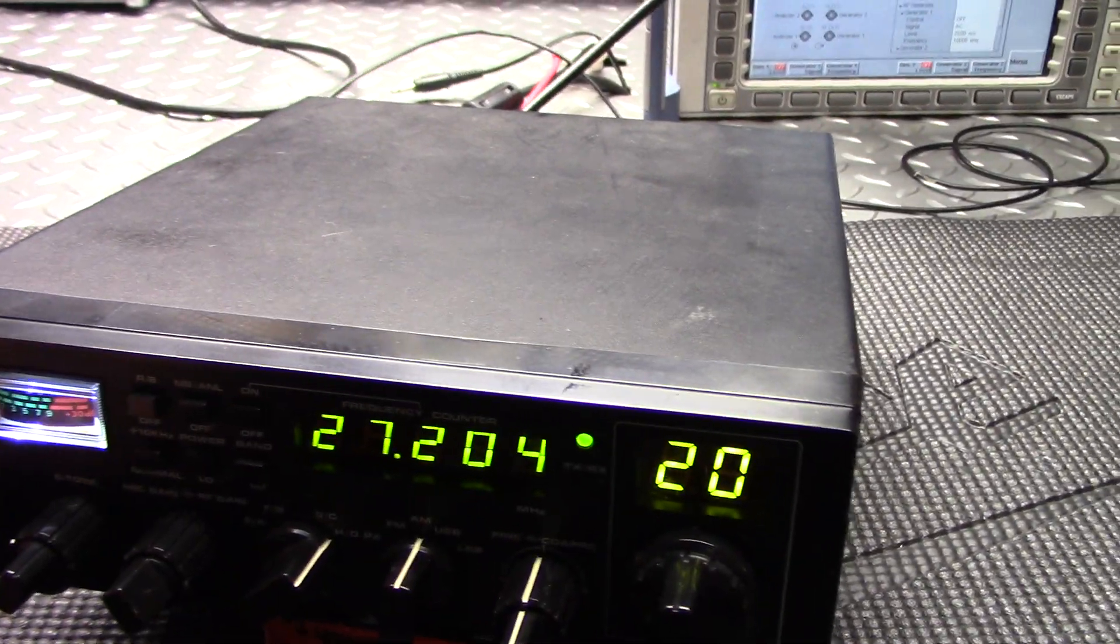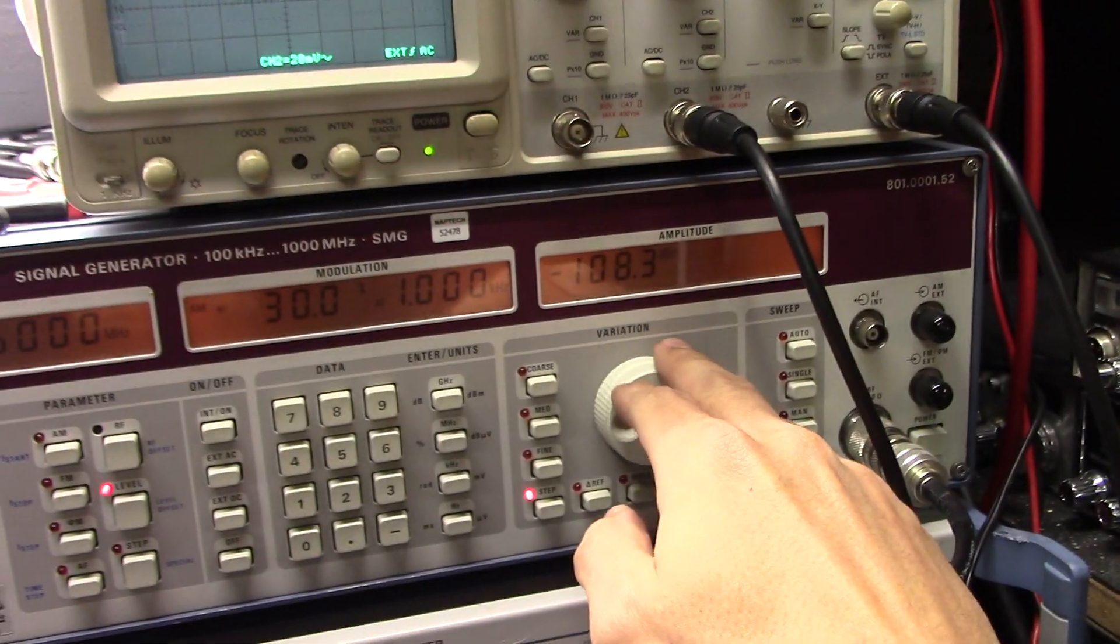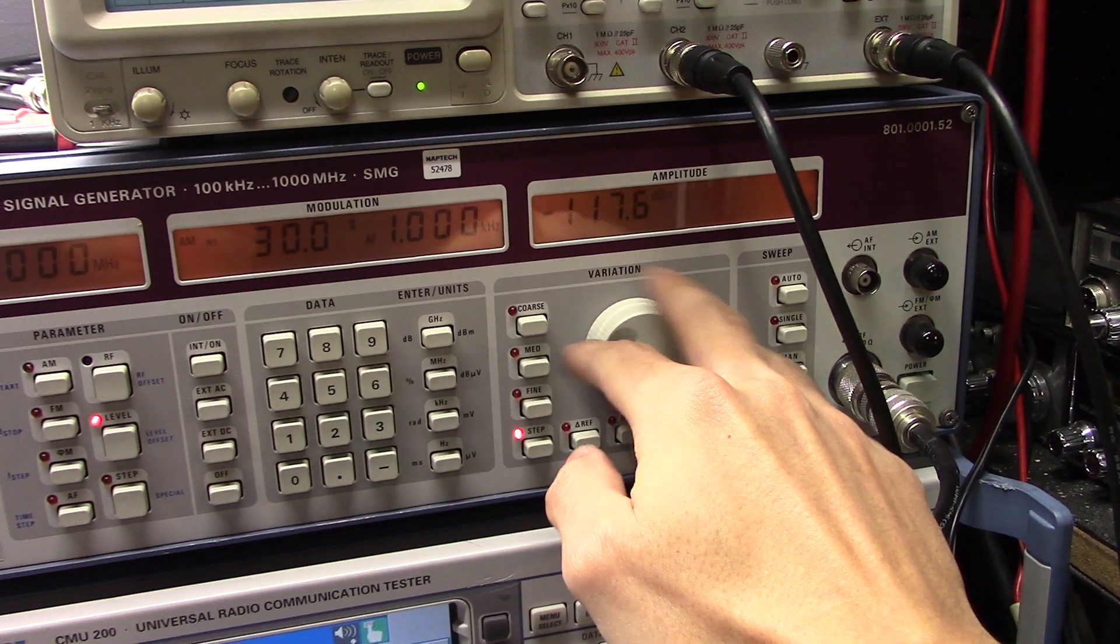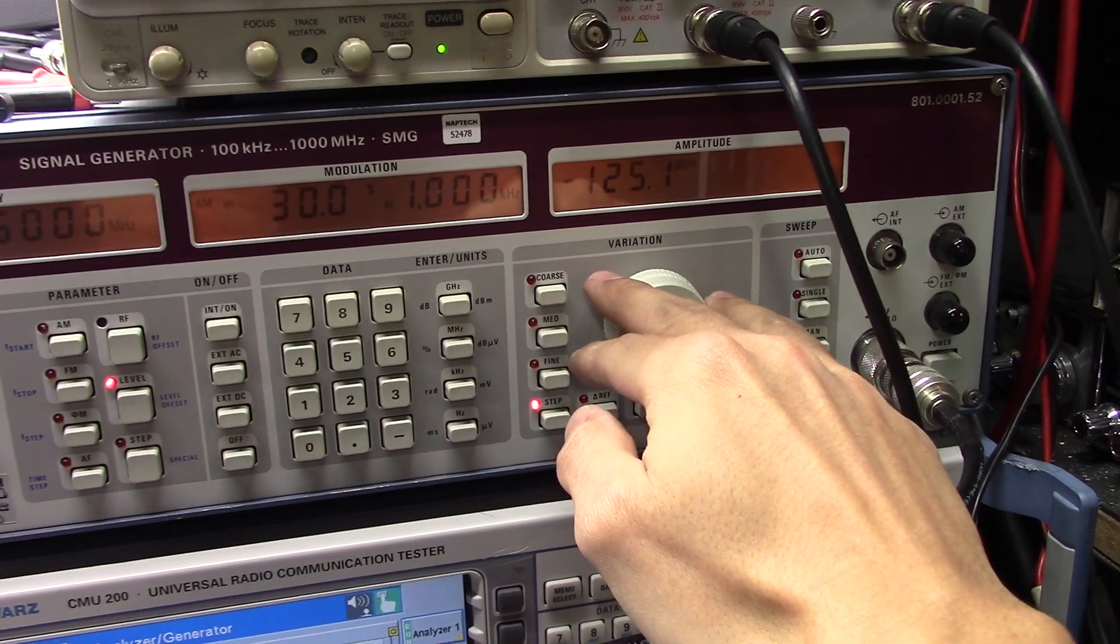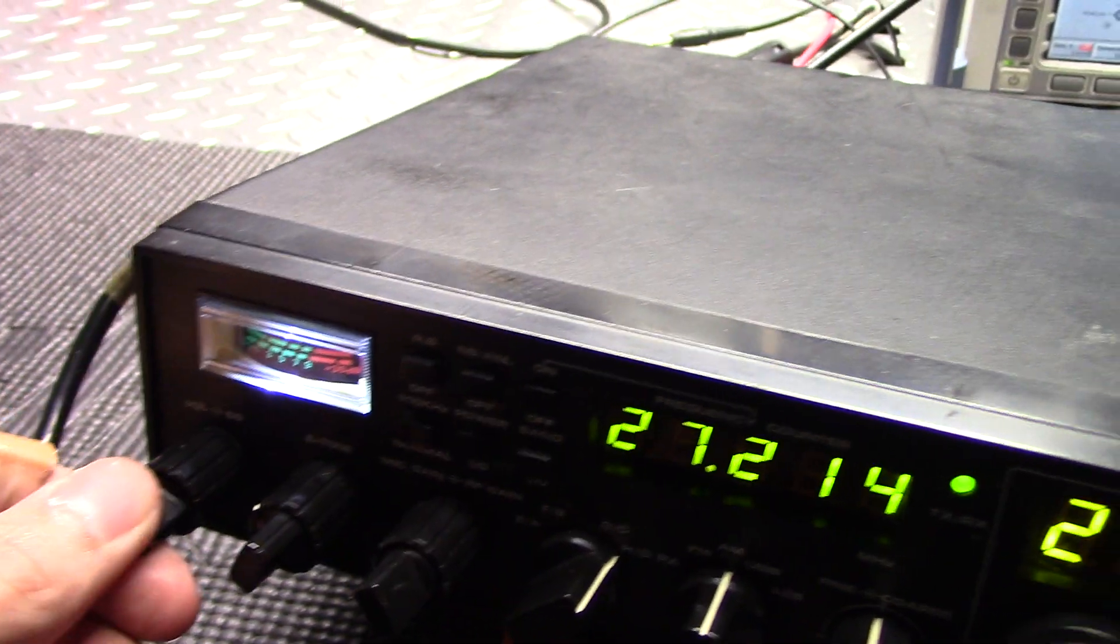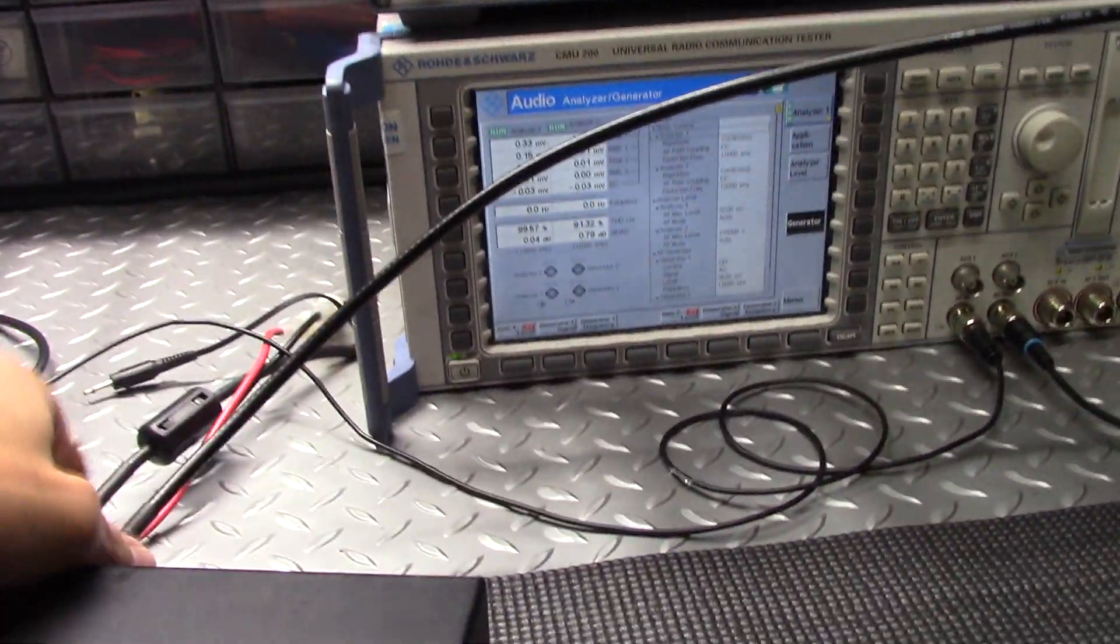Sorry about that. Okay, let's test it out, see where she really falls out at. Let's just do 125 to see. Do 125. Oh yeah, you can still hear it there at negative 125. Very, very nice receiver. Came out great. Alright, that's done.